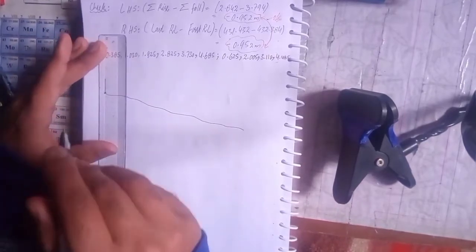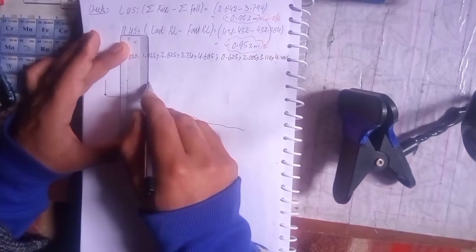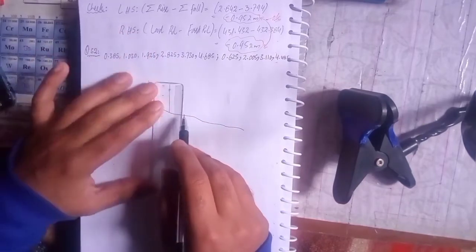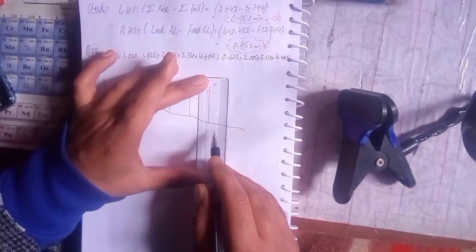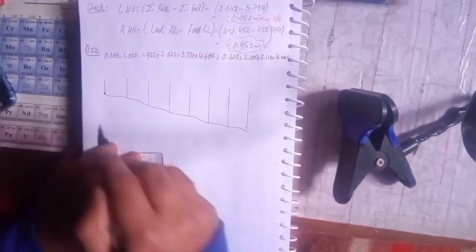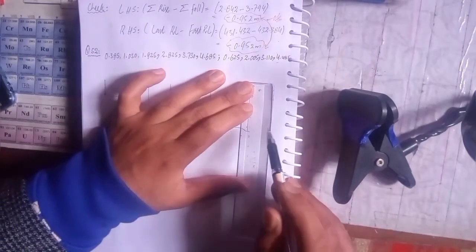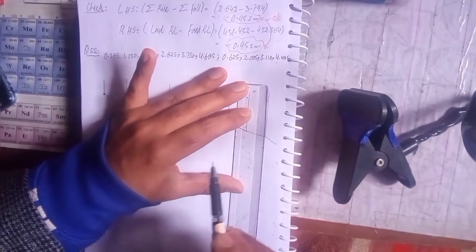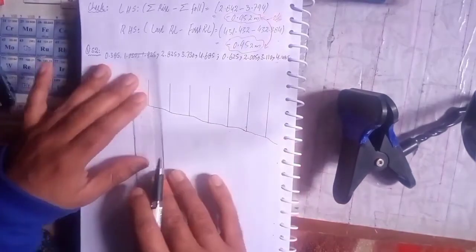You have to draw the pointers according to the question. The distance between the points will be given in the question — in this question it is 20 meters. The readings have already been given, so I will be showing you the value of the distance between every point. This way we can calculate the number of readings and draw the diagram carefully so that there would be no error further.